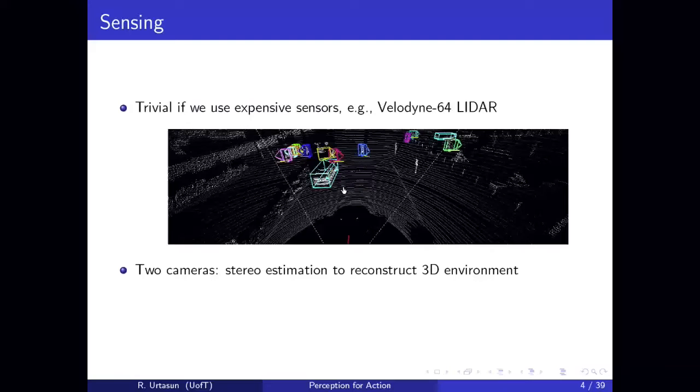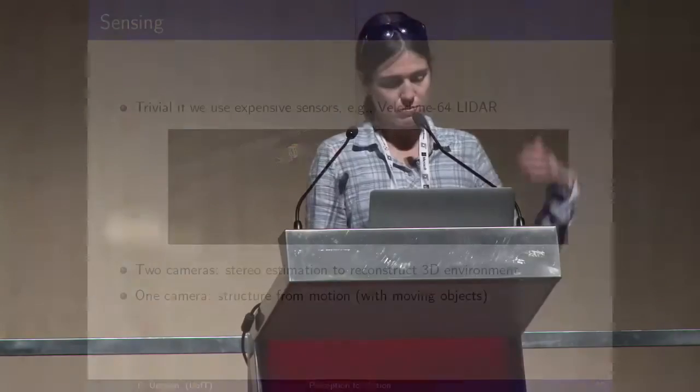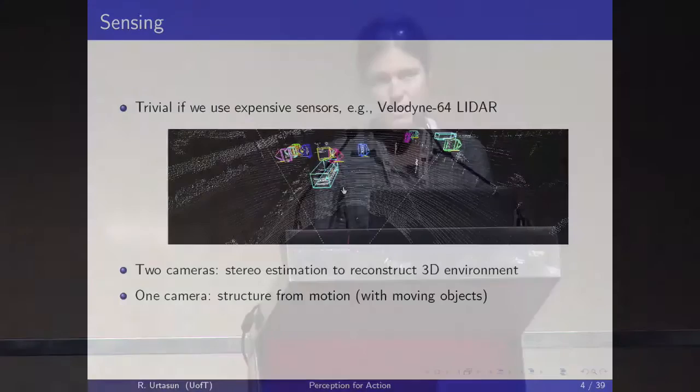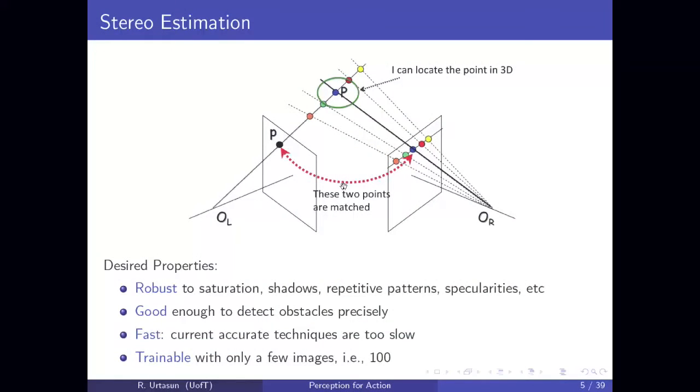In the case of using two cameras, the basic idea is that you want to solve the 3D reconstruction problem, which is stereo estimation. You can go one step further and use just a single camera, then what you need to do is solve the structure from motion problem. You need to do this by also handling moving objects that break most of the algorithms out there in computer vision.